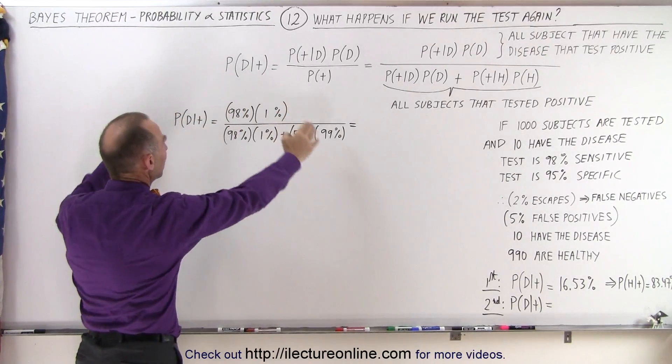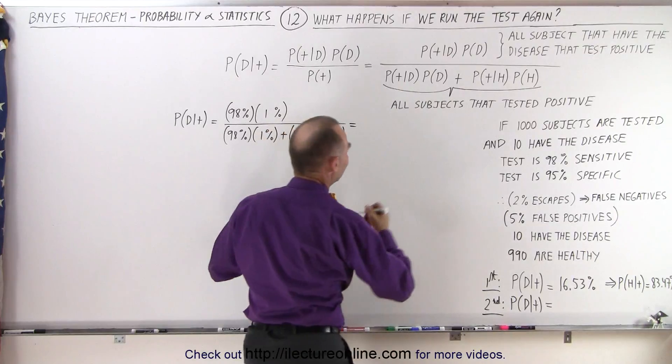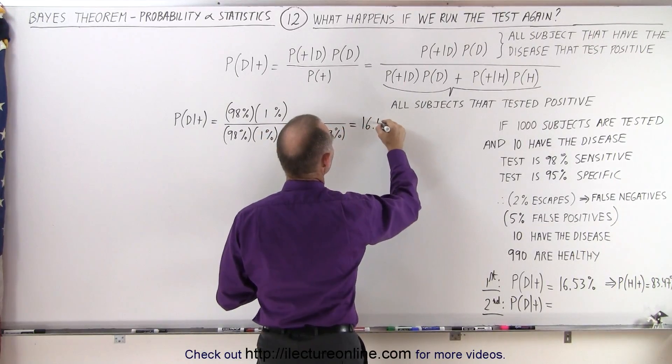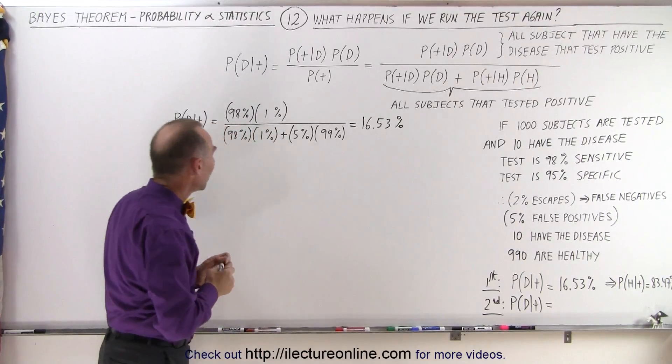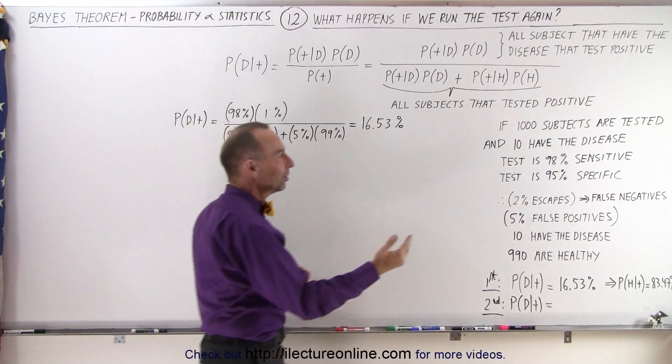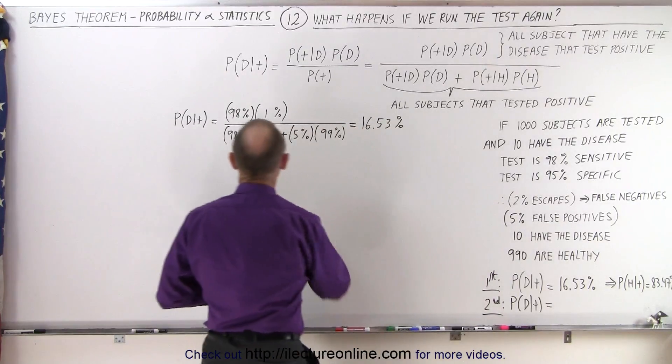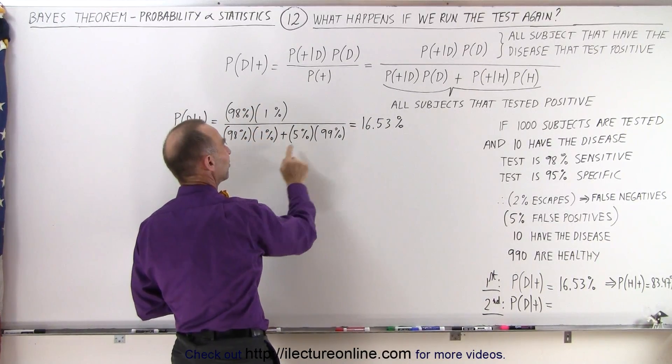So here's the equation that we used to come up with the 16.53%. So what changes? Well, the 98% doesn't change because that's still the sensitivity of the test. So the 98% stays the same.